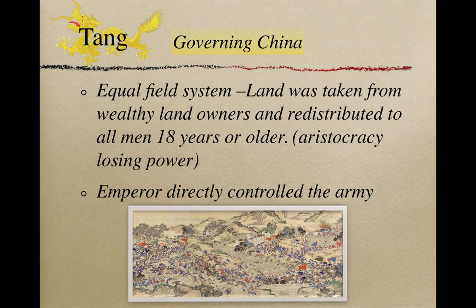The Emperor feared the wealthy aristocracy, so in order to control them, he created the equal field system. This redistributed the land — heads of wealthy aristocracy were only given 1,370 acres, while healthy men ages 18 to 59 were given 13 acres. Everyone now had to pay taxes to the Emperor based on land size. This generated more wealth for the government, reduced the power of the aristocracy, and increased the loyalty of the peasants who received land.